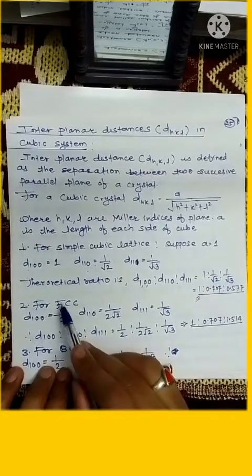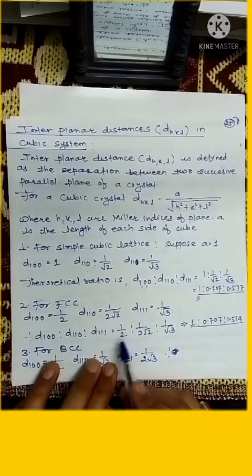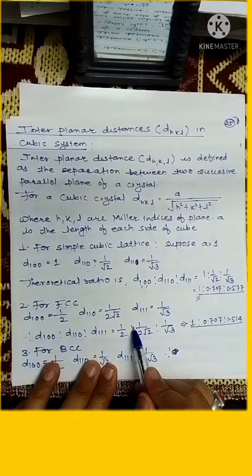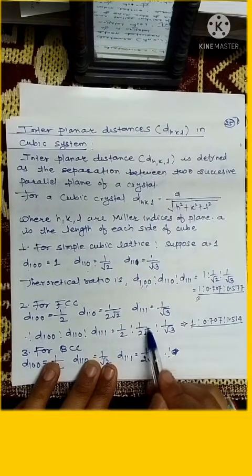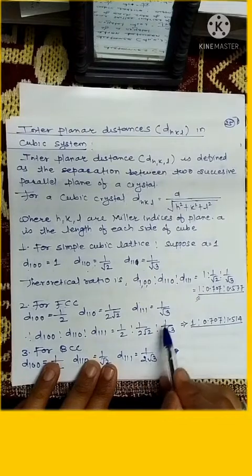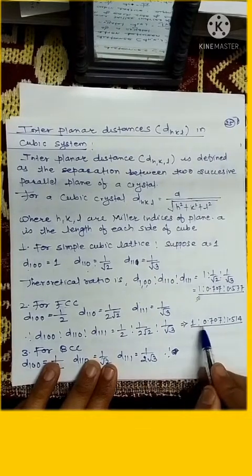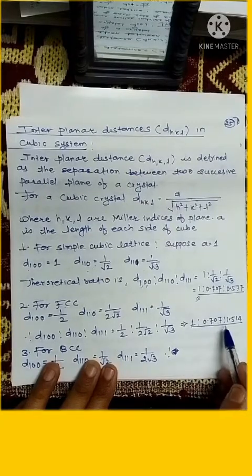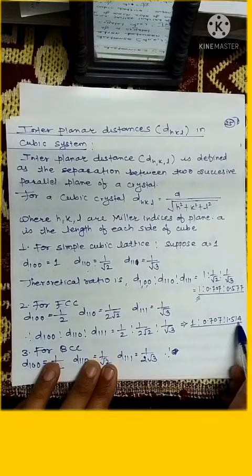For FCC, theoretical ratio is equal to 1 : 1/√2 : 1/√3. That is, if we solve it, it is 1 : 1 : 0.707 : 0.814.